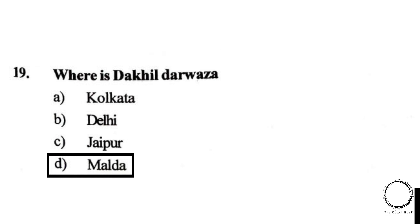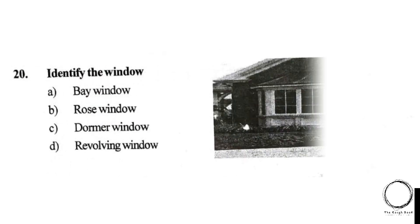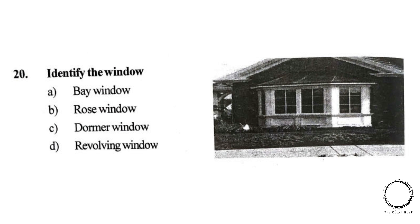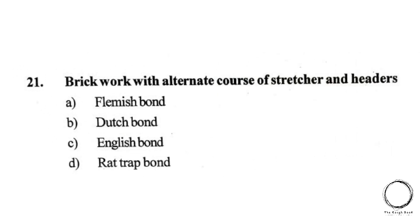Moving on: identify the window shown in the image. Options: A) Bay window, B) Rose window, C) Dome window, D) Revolving window. The right answer is A, Bay window. Moving on: brickwork with alternate courses of stretcher and header is called: A) Flemish bond, B) Dutch bond, C) English bond, D) Rat trap bond. The right answer is C, English bond.